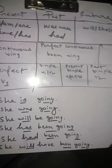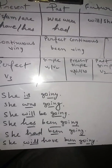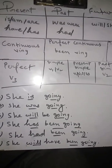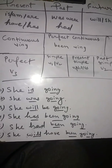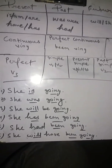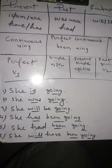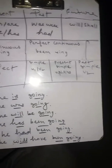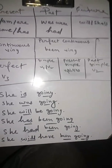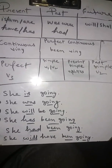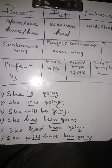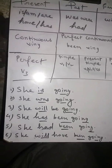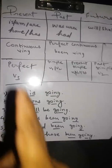Whenever you locate was, or were, or had in a sentence, it can be past tense — it cannot be present or future. And whenever you locate will or shall, it will only be future tense; it cannot be any other tense.